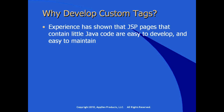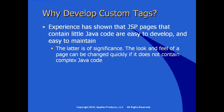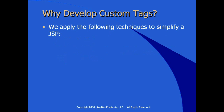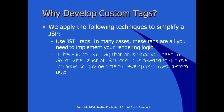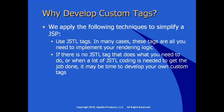Experience has shown that JSP pages which contain very little Java code are easier to develop and maintain. This is of particular significance because the look and feel of a page can be changed quickly if it doesn't contain complex Java code, which is more difficult to troubleshoot. We apply techniques to simplify the layout in JSP source code. We use JSTL — the Java Standard Tag Library. In many cases these tags are all you need, but if there's no JSTL tag that does what you need, or when a lot of JSTL coding is needed, it may be time to consider your own custom tags.